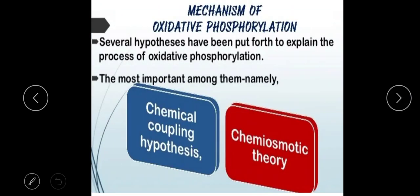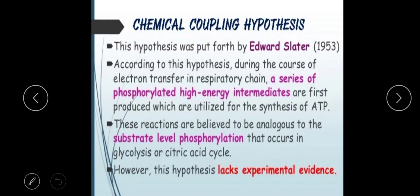If we talk about the mechanism of oxidative phosphorylation, there are several hypotheses. The most important is the chemical coupling hypothesis, proposed in 1953. This hypothesis suggested that highly phosphorylated, energy-rich intermediates are formed which help synthesize ATP, similar to what we see in substrate-level phosphorylation in glycolysis or the citric acid cycle.